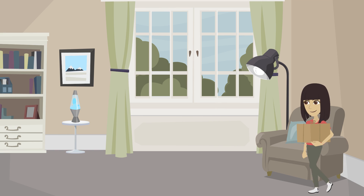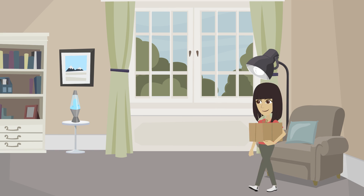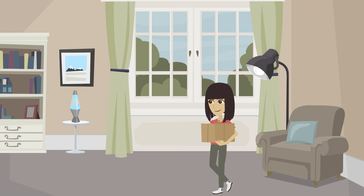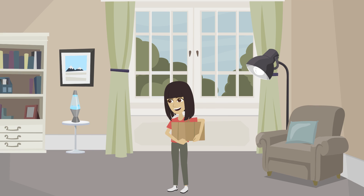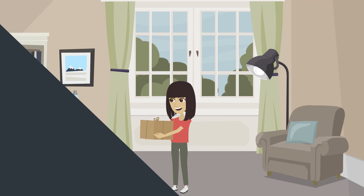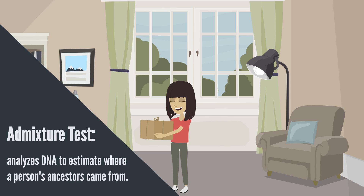Daisy is interested to learn more about her ancestry, so she decided to buy an ancestry test and it arrived in the mail today. Out of the different types of ancestry tests that are available, she chose to do an admixture test because she wants to get a better idea of where in the world her ancestors came from.